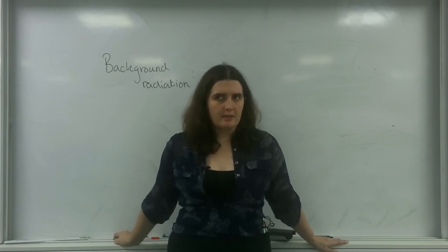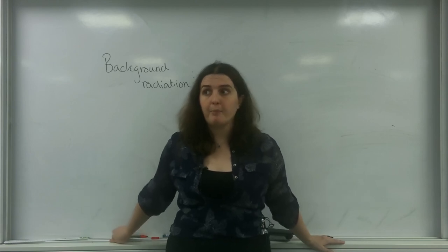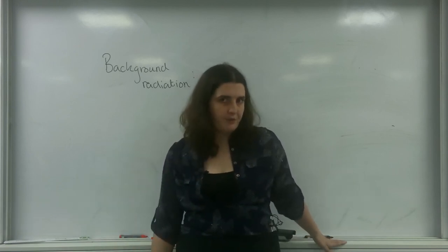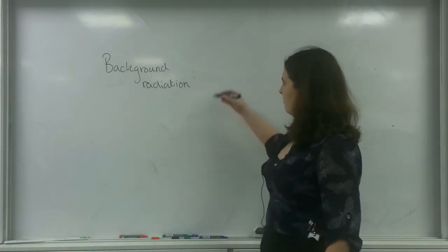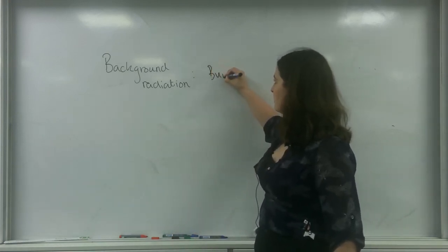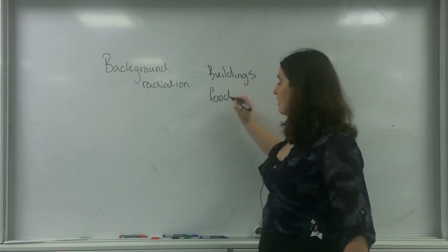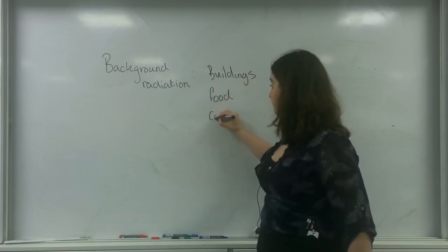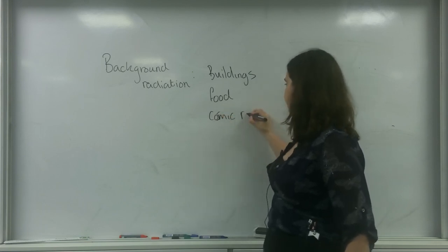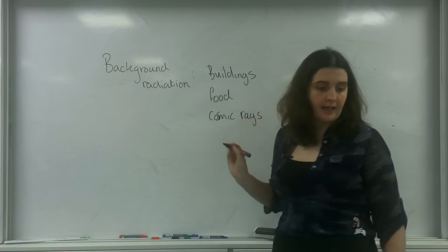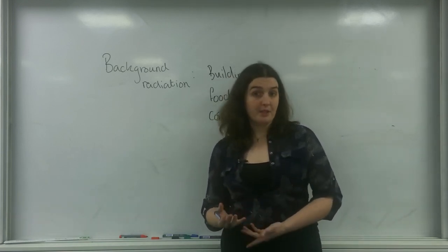Background radiation is a naturally occurring thing that happens all around us, and every day we are bombarded by radiation from various sources. The types of sources you need to know are buildings, food, cosmic rays, and you may also experience background radiation from medical sources.